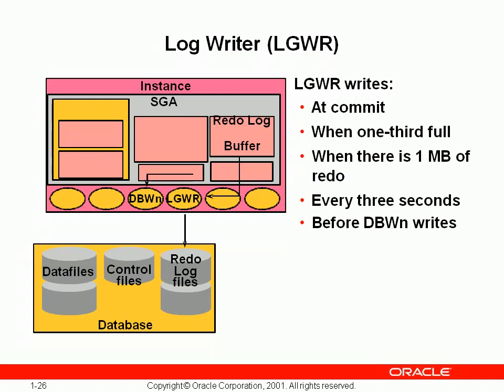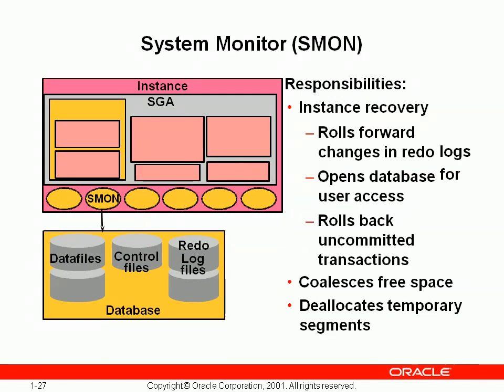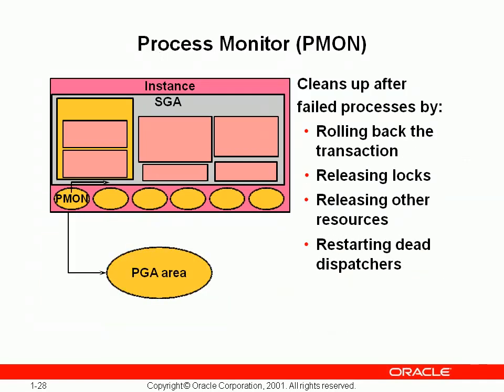The log writer writes at commit, when one third of the redo log buffer cache is full, and before the database writer writes any dirty buffer on a data file. SMON, System Monitor, is responsible for instance recovery in a redo log file when database startup is in the mount stage. SMON looks to find CKPT checkpoints and tells the database writer to roll forward the changes on the data files. PMON, Process Monitor, is responsible for cleaning up after a failed rollback and releasing locks and other resources.